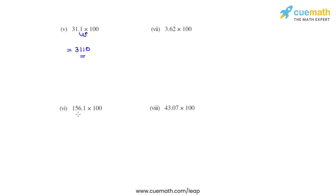Coming to the sixth bit, we have 156.1 multiplied with 100, so we again move the decimal by two places. There is no digit after 1, so that can be filled with a 0, and the answer that we get is 15610.